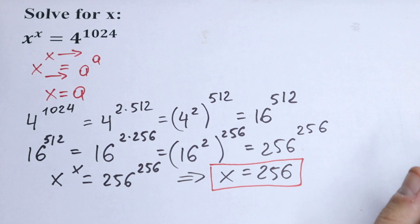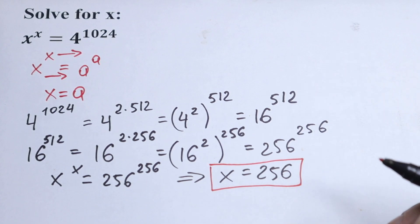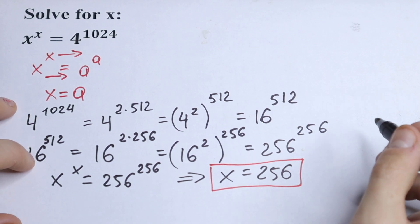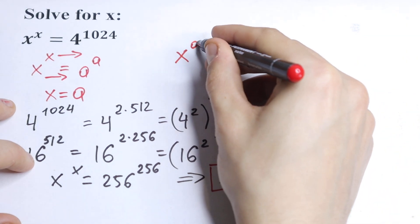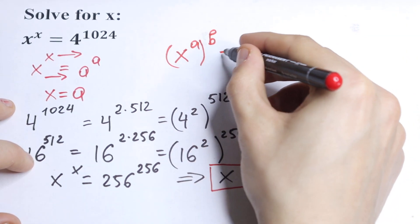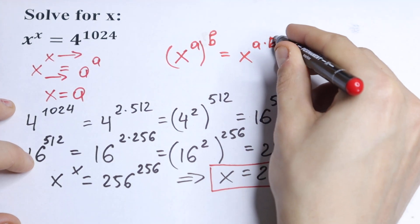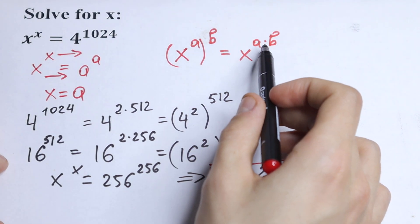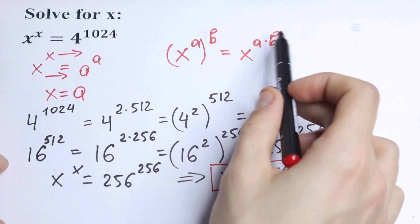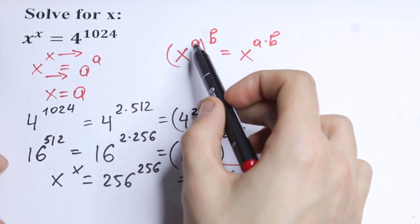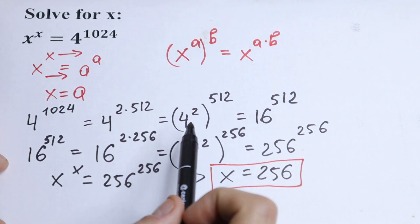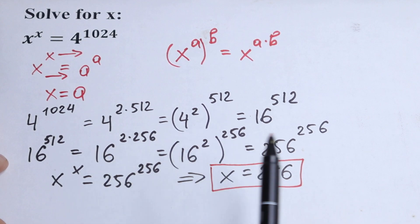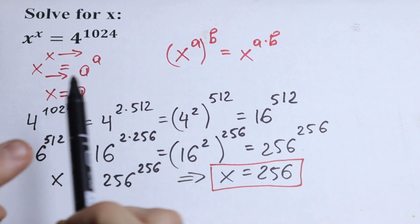If you agree with this method — or disagree — write your suggestion or question in a comment. The rule we used here is: x to the power a, raised to the power b, equals x to the power a times b. It's a simple rule — learn it and remember it. This rule also works in reverse: we can split an exponent and rewrite it as a power of a power.